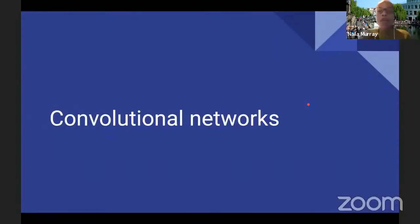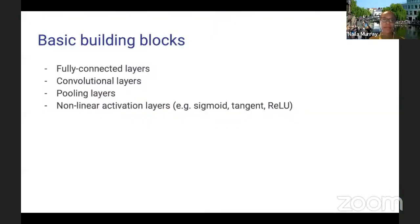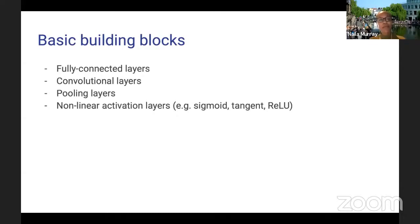Now let's look at convolutional networks. Convolutional networks are based on key building blocks — a huge diversity of them, but they tend to be composed really of these key building blocks in a huge variety of configurations. Just with these four basic building blocks, you can do quite a lot of different things.